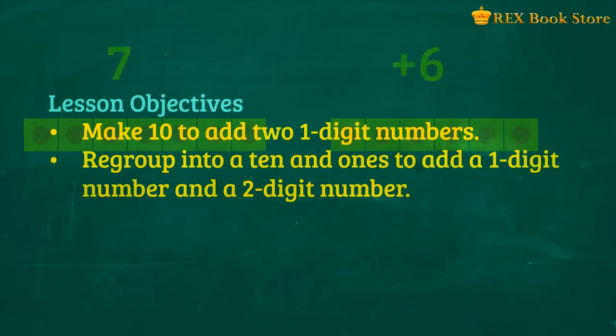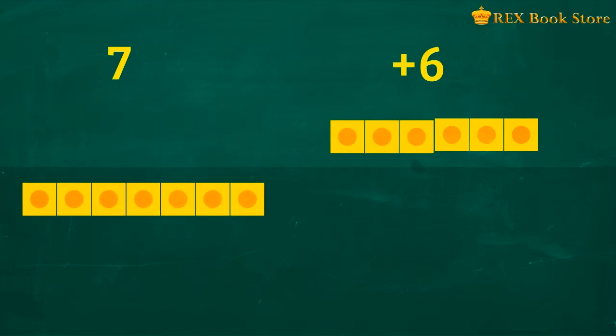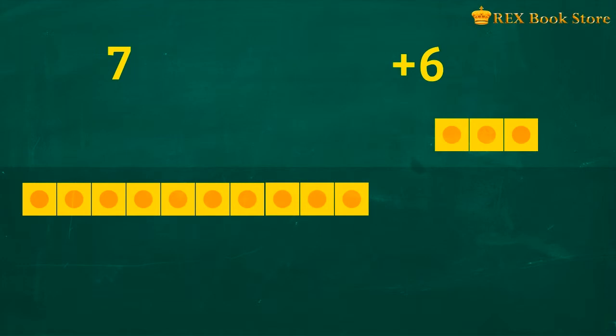So, how do we add 7 and 6? We can make 10 to add the two numbers. Let's take 7 of these units and 3 of these to make a group of 10. How many are left?